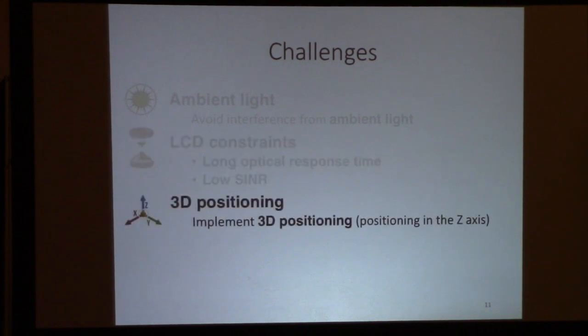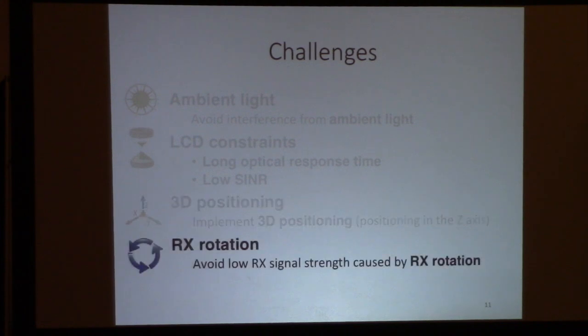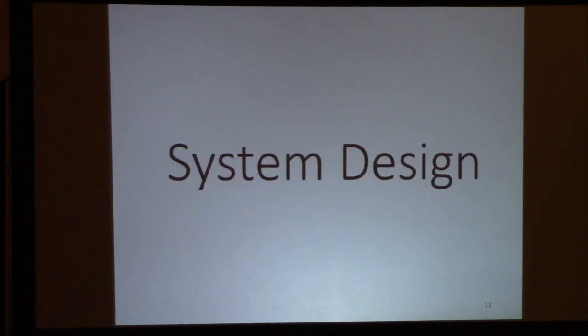But there are several challenges we need to address. First, we need to remove ambient light interference caused by either sunlight or other luminaries in the environment. Second, we need to carefully design modulation signals to compensate for LCD constraints. Third, we would like to enable 3D positioning with a single strip. Last, we're going to support arbitrary rotation of the receiver. However, this degrades the signal, so we need to deal with it.